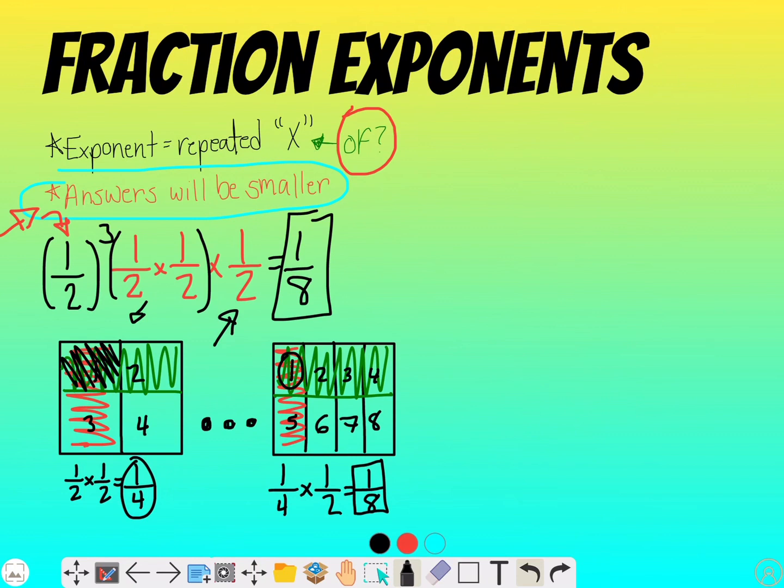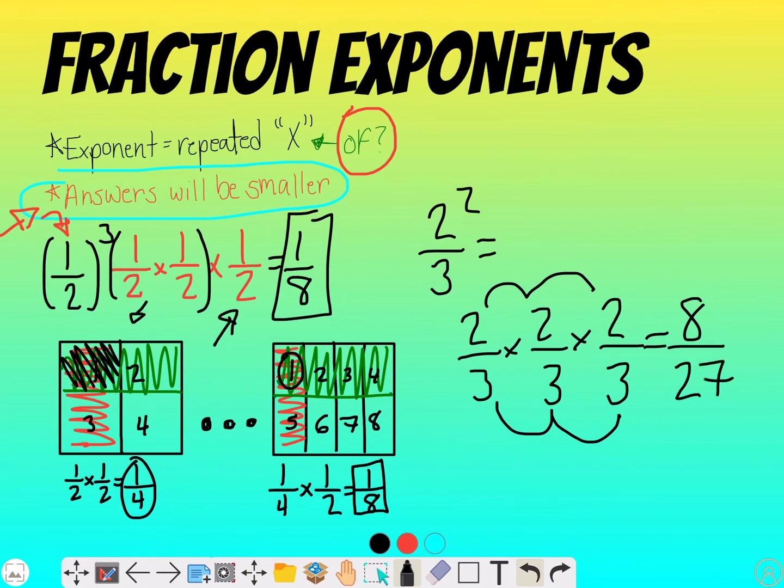If you just want to set up a problem like two thirds to the third, you set it up as two thirds times two thirds times two thirds and multiply your numerators and denominator. Two times two is four. Four times two is eight. Three times three is nine. Nine times three is 27. And I promise you that eight twenty-sevenths is going to be much smaller than your answer of two thirds.